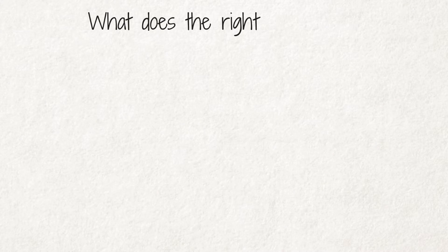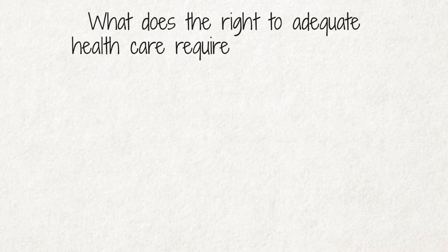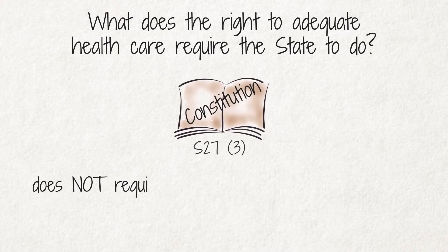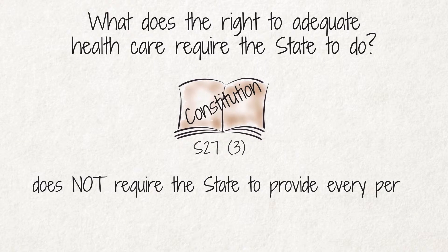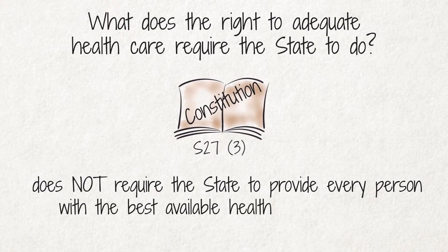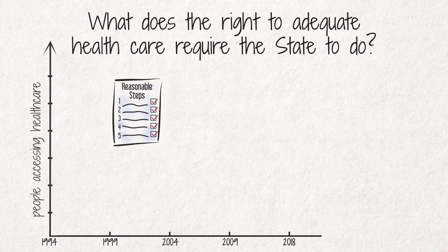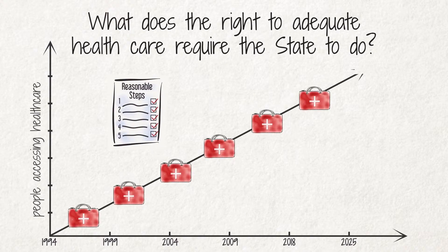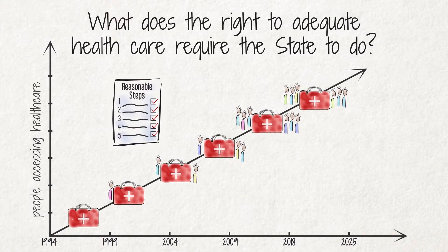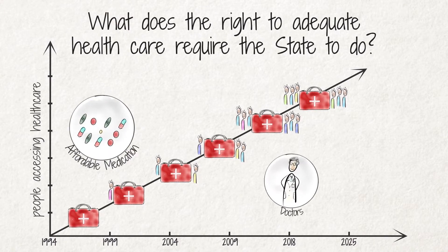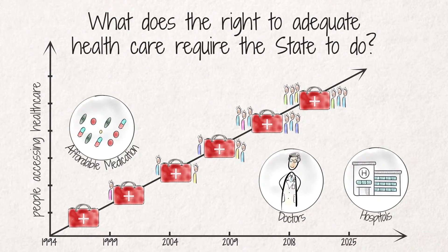What does the right to adequate health care require the state to do? Section 27 does not require the state to provide every person with the best available health care immediately. It does require the state to take reasonable steps so that over time more and more people will have better access to health care services. This includes access to affordable medicines, doctors and hospitals for people who are not able to pay.